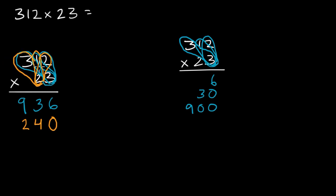And then last but not least, if I multiply the 20 times the 300, I could say that that is going to be 6,000. You might just say 2 times 3, but it's really 20 times 300, which is why the 6 is in the thousands place.